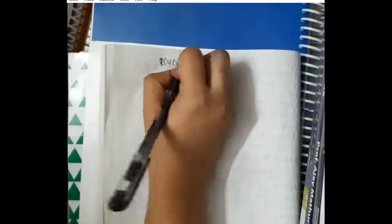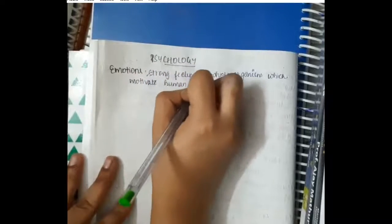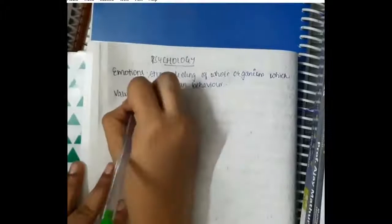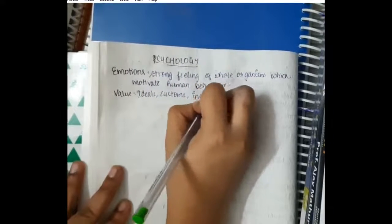Hello friends, let us now learn some important points about psychology. Emotions are strong feelings of the whole organism which motivate human behavior. Then values are ideals, customs, and institutions of a society towards which people of a group have an effective regard.